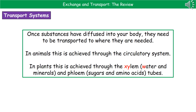Plants also have their own transport system using two types of tissue we'll look at later in this topic: xylem, which transports water and dissolved minerals, and phloem, which transports sugars and amino acids. Throughout the plant, these two types of tubes carry everything the plant needs to all its different regions.